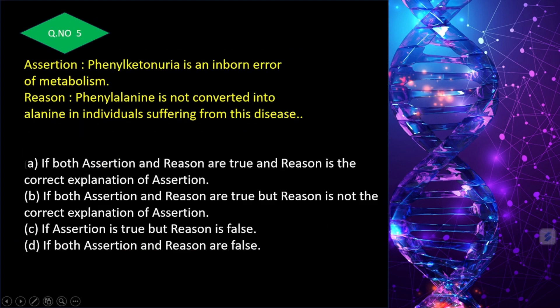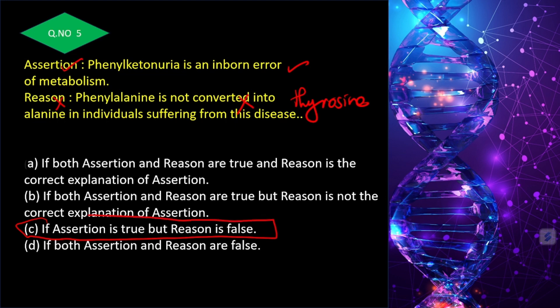Phenylketonuria is an inborn error of metabolism — assertion is correct. However, the reason states that phenylalanine is not converted into alanine — this is wrong. Phenylalanine must be converted into tyrosine, not alanine. So assertion is true and reason is false — answer is C.